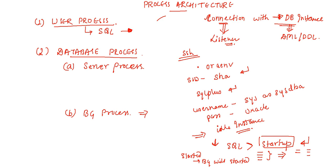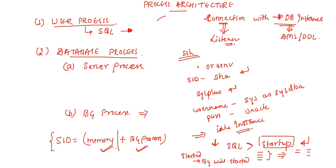Once the instance is allocated, background process is also started because the instance is what - SID is what? SID is the memory component plus background process. So once the instance is started, memory is also allocated as well as the background process will be started. If the instance is shut down, no memory allocation will take place and no background process will be started. Once the SID is up and running, memory will be allocated and background processes will be started.